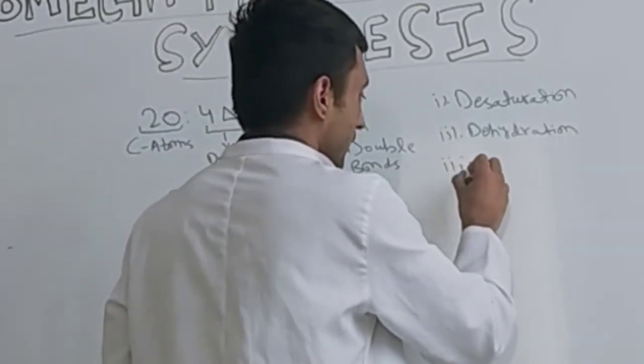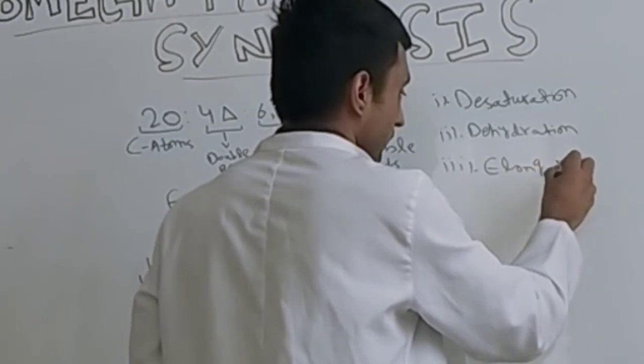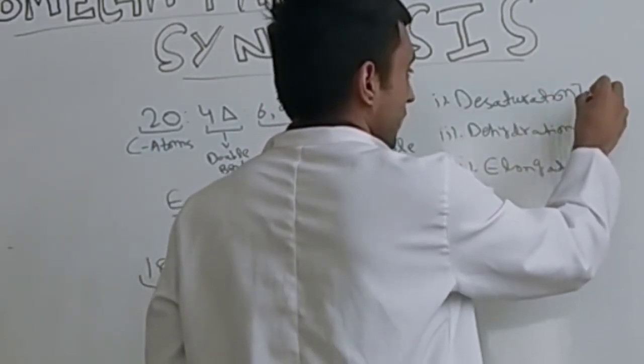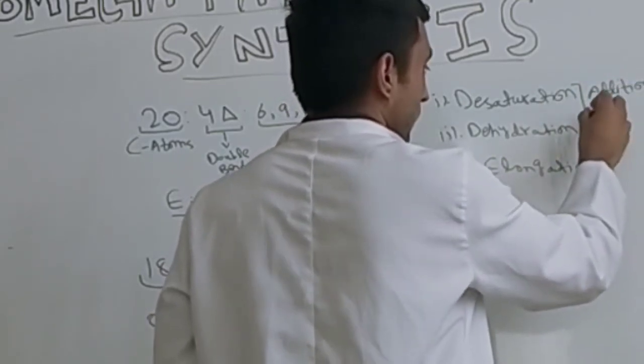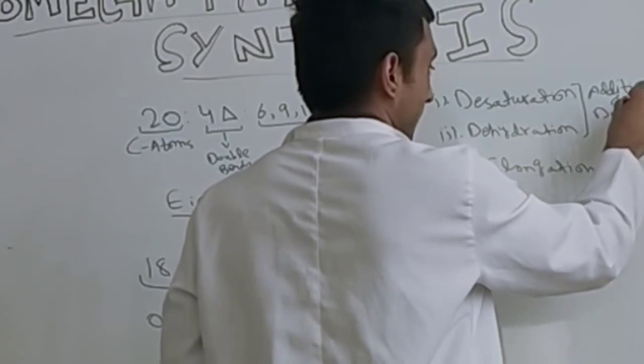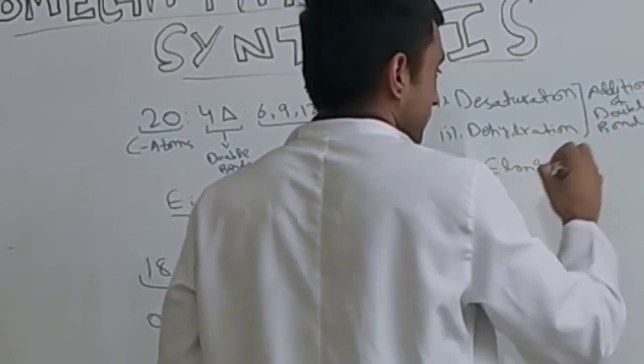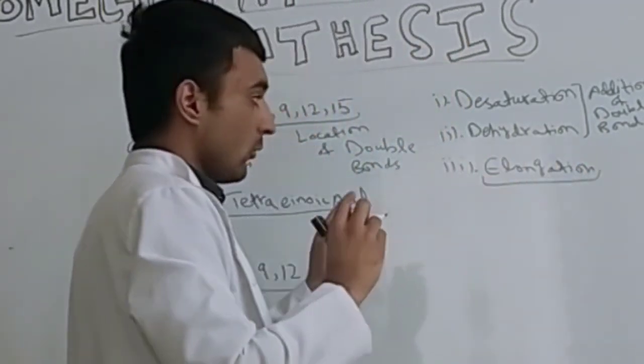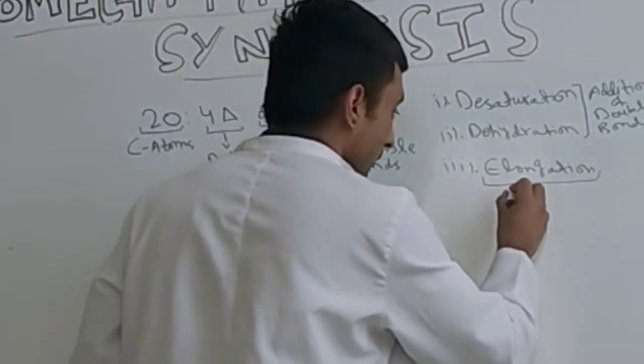Number three is elongation. In the case of elongation, addition of double bond does not occur, but addition of carbon atoms occurs.